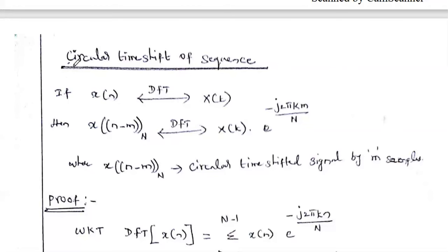First, we are going to discuss the circular time shift property of the DFT. In order to define circular time shift, we already studied the time shifting property in all transforms — Fourier transform, discrete time Fourier transform, Z-transform, and Laplace transform. The transformed value of a time-shifted signal is calculated using this property. However, here it is not a simple time shift; it is a circular time shift.